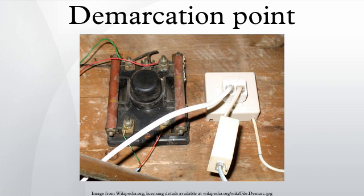In the United Kingdom, the demarcation point occurs on the LJU master socket, whose wiring is partly owned by the customer and partly owned by the phone company. Other secondary sockets are the customer's property. Newer NT-E5 master phone sockets have a removable front panel — the front panel and its wiring is the customer's, while the rear wiring is BT Openreach's. The removable panel allows separation of these two parts and independent maintenance, and access to a test socket to determine whether line faults are in the customer's wiring or BT Openreach's external network.